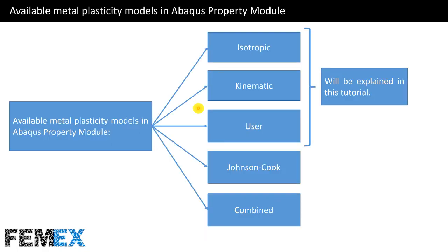Here I want to talk about available metal plasticity models in Abacus property module. They are isotropic, kinematic, user, Johnson-Cook, and combined plasticity models. In this tutorial, I will talk about isotropic, kinematic, and user plasticity models.